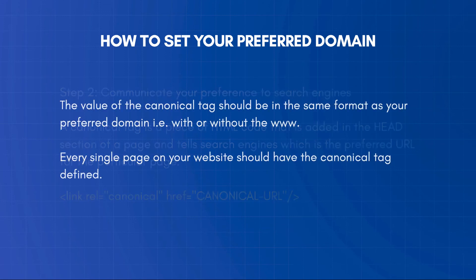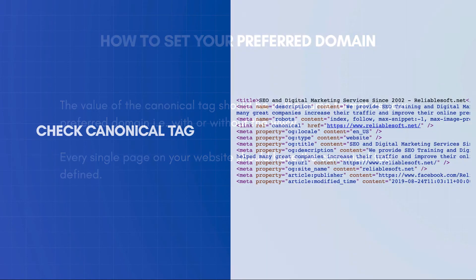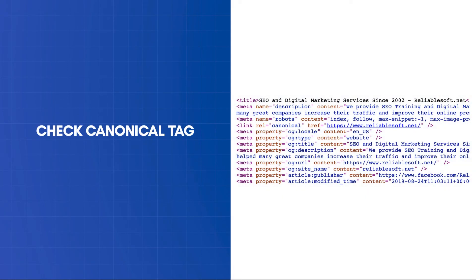Every single page on your website should have the canonical tag defined. To check if your website sets the canonical domain correctly, open your homepage in a new browser window and go to View Source. Search for the word canonical and you should see a line indicating the canonical URL for that particular page. If you cannot find the canonical declaration in your HTML code, you should take action to add it.